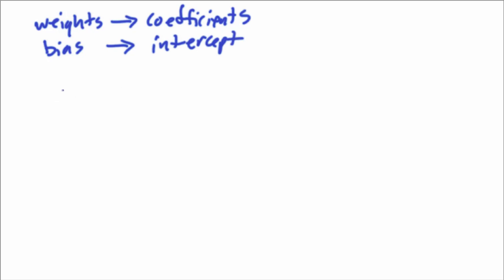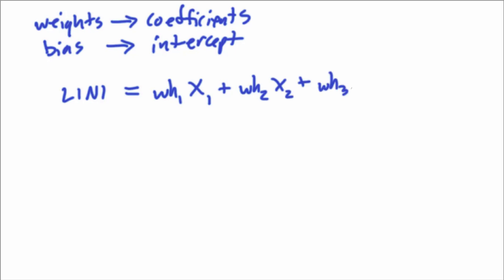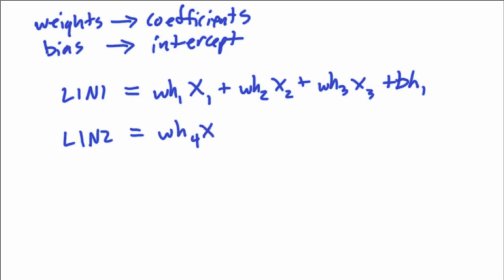So Layer 1 Neuron 1 is going to be: weight 1 times x1, plus weight 2 times x2, plus weight 3 times x3, plus the bias bh1. That's the first calculation for the first neuron. Layer 1 Neuron 2 is almost exactly the same — it's weight 4 times x1, plus weight 5 times x2, plus weight 6 times x3, plus bias bh2. This gives us the base linear calculations for both neurons. We'll call this Step 1.